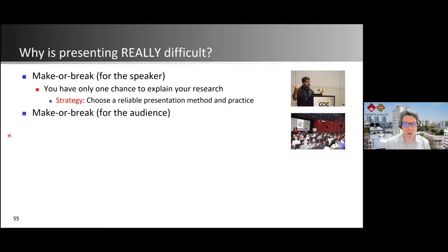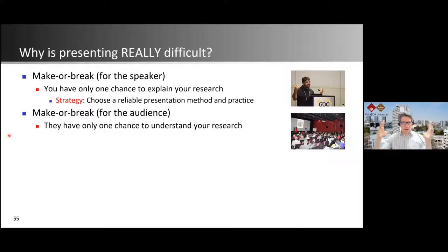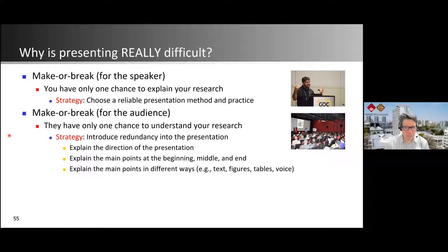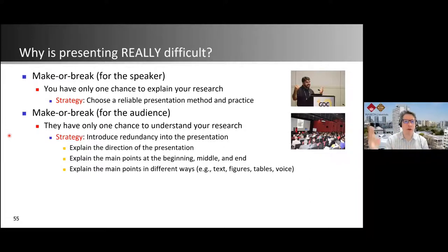It's also make-or-break for the audience — they only have one chance to understand your research. They come to the conference and listen, but they can't stop you in the middle of a presentation. So you need a strategy to introduce redundancy: explain the direction of the presentation in the outline or title slide, explain what the main points are going to be, then actually explain those main points at the beginning, middle, and end. Also explain the conclusion again and present points in different ways — as text, figures, tables, or using your voice.